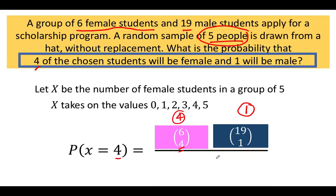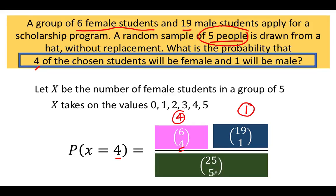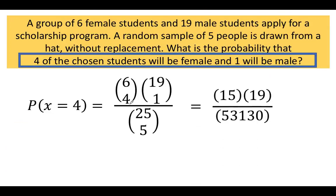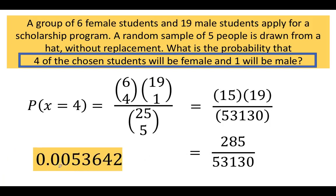Our sample space is 25 students sampled five at a time, or 25 combined five at a time. Six combined four at a time equals 15, and 19 combined one at a time equals 19, and 25 select five equals 53,130. So 15 times 19 is 285, divided by 53,130, giving us a probability of 0.0053642 — the probability of selecting four female students and one male student.